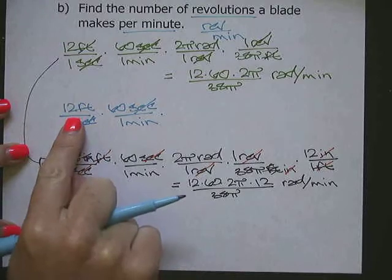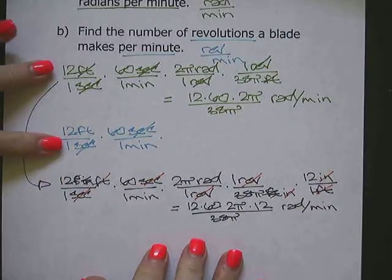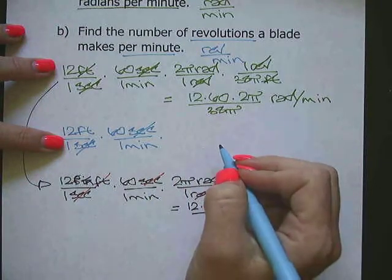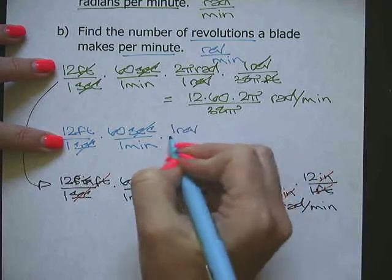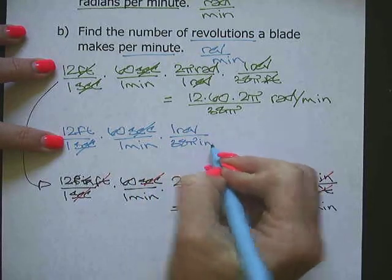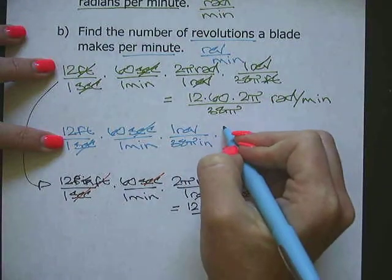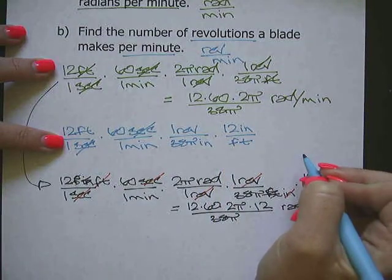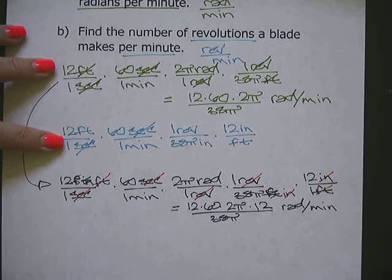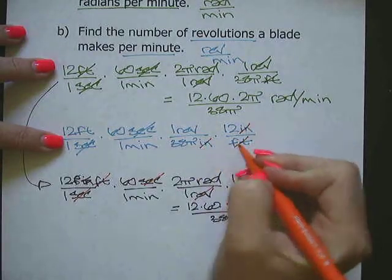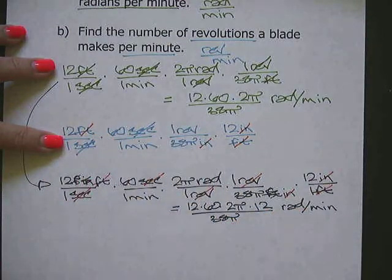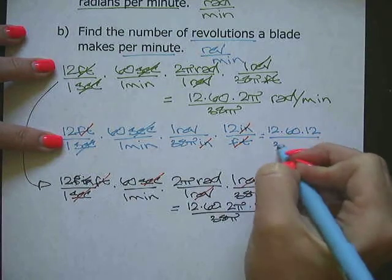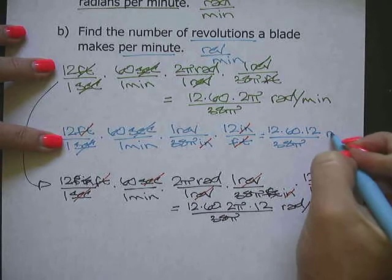Going back to find revolutions per minute for the ceiling fan: we start with 12 feet per second, convert with 60 seconds per minute, then one revolution equals 38 pi inches, and 12 inches per foot. The seconds, inches, and feet all cancel, leaving revolutions in the numerator and minutes in the denominator. So the answer is 12 times 60 times 12 divided by 38 pi revolutions per minute.